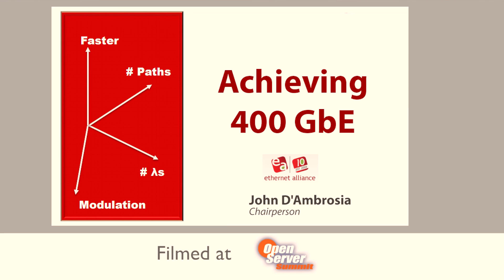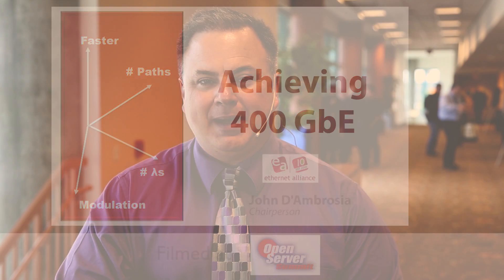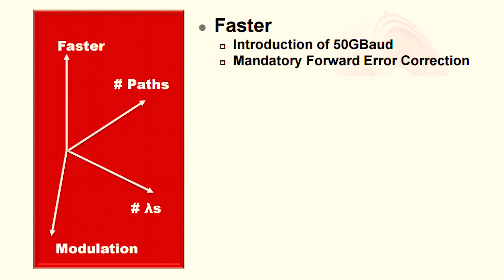On achieving 400 Gigabit Ethernet, one always has a number of axes to consider in terms of how to achieve it. You can go faster: we see ourselves moving from 25 gig signaling with NRZ to 50 gig PAM4, and in doing so we see ourselves adding forward error correction.